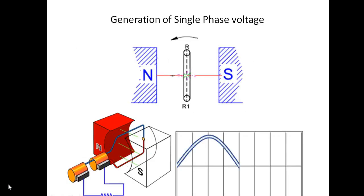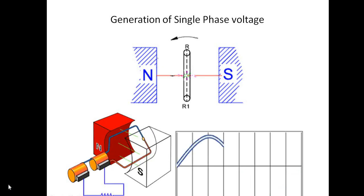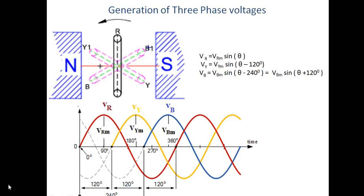This is an example of generation of single-phase voltage. In the animation, a single coil is rotating in the magnetic field. When it cuts the magnetic lines of force, EMF gets induced in the coil, and the nature of that EMF is sinusoidal. Depending upon the positions of the coil, it reaches different voltage levels. This is a single-phase system. Now, polyphase system means poly = many, phases = windings or circuits. Whenever the circuits are more than one, it is known as a polyphase system. Universally, the 3-phase system is adopted because it has some advantages over the single-phase system.